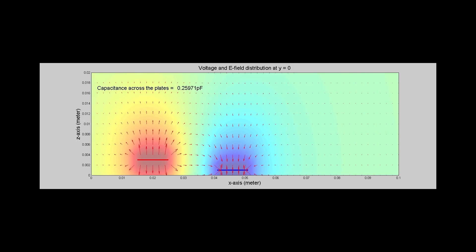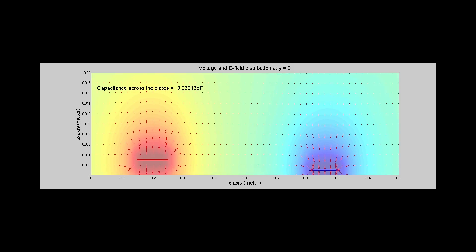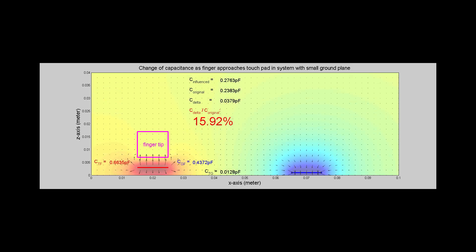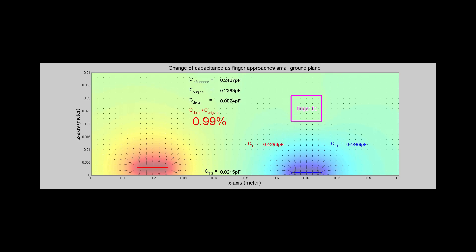But to further increase the sensitivity for proximity sensing, the ground plane got to be further away. In this simulation, the finger influences the capacitance from a further distance and the touch signal is stronger. But when the finger moves to the ground plane, the same amount of signal can also be read.